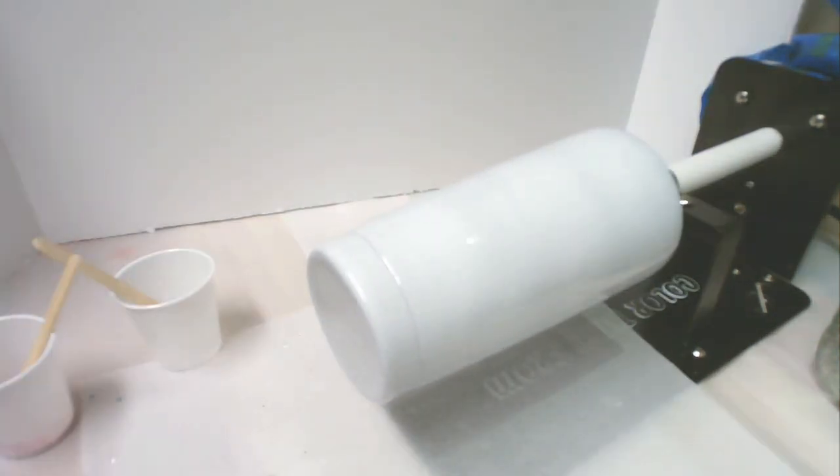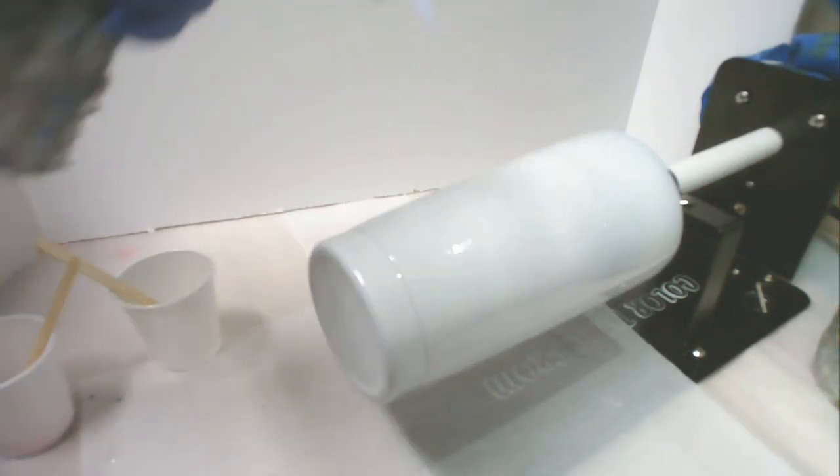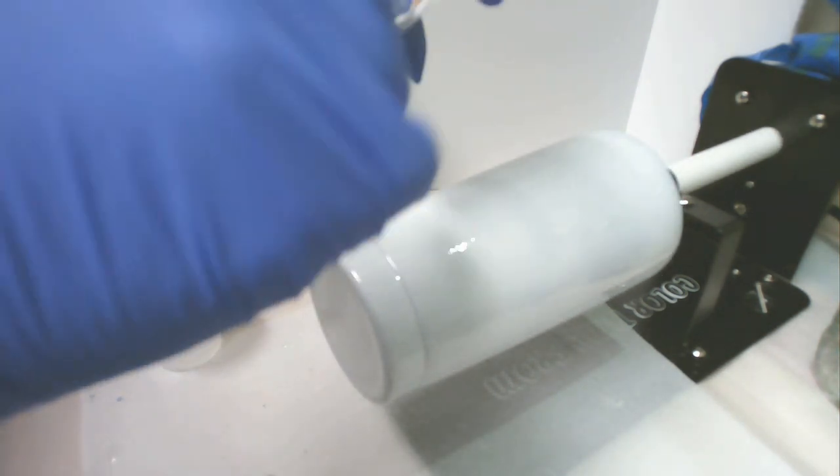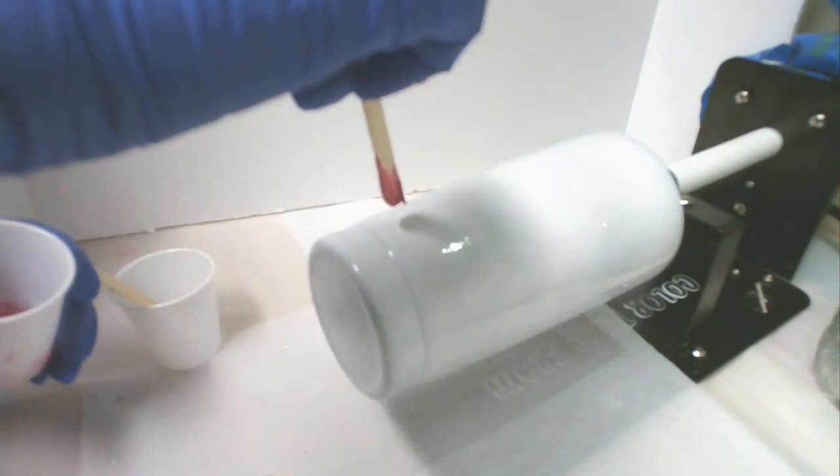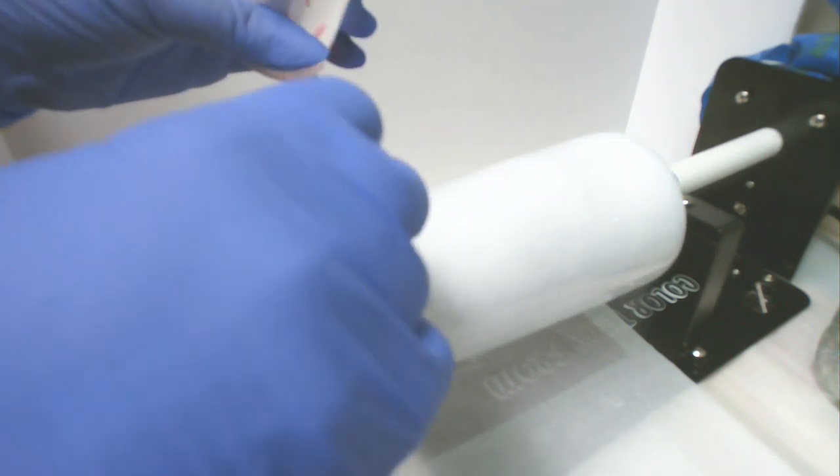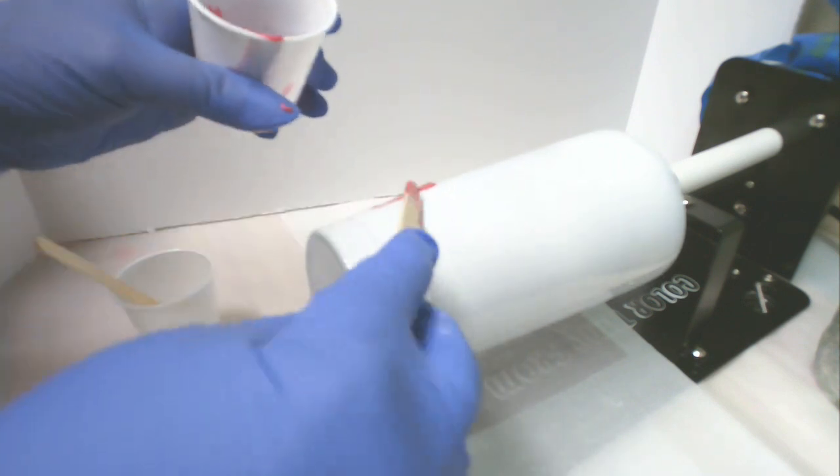And when you first do it, it'll look kind of streaky where you've been wiping it on there, but hit it with your heat gun or your torch. And that will pop your bubbles and start allowing the resin to move just enough to get a nice smooth layer on there.